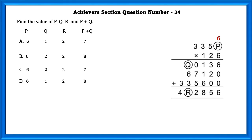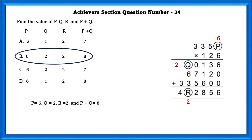So q equals 2. Adding all this we can find r, which is also 2. Therefore p equals 6, q equals 2, r equals 2, and p plus q equals 8. That is option B.